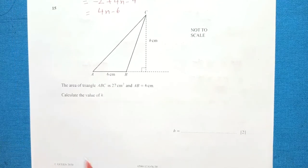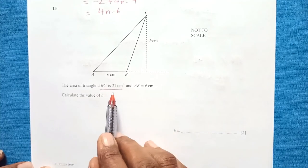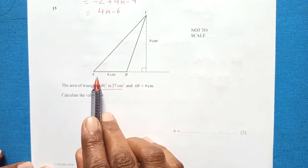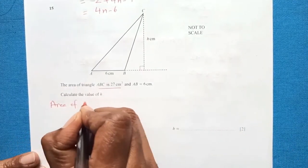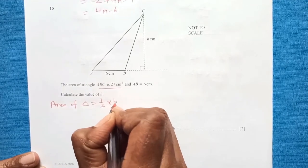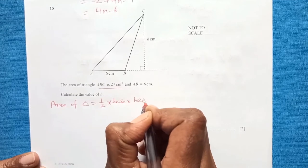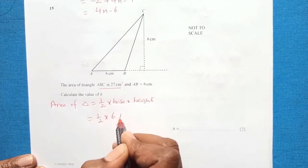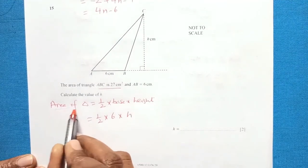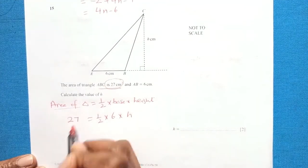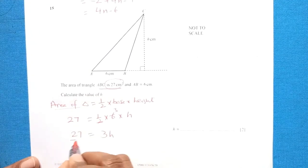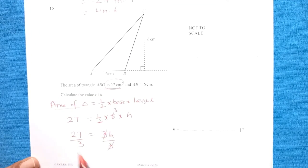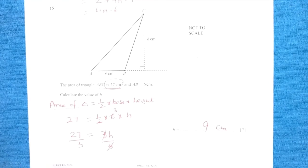Question 15: the area of triangle ABC is 27 cm² and AB = 6 cm. Calculate the height. Area = ½ × base × height, so 27 = ½ × 6 × h = 3h. Dividing both sides by 3: h = 9. So the height is 9 centimetres.